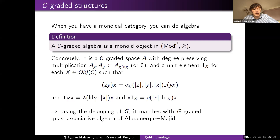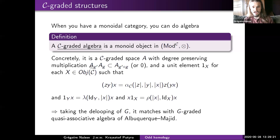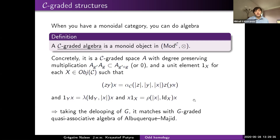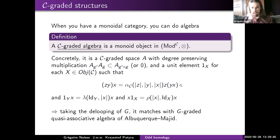A clarifying question was raised: in the unit formula, the small x is an element of the algebra while the capital X is an object in the grading category, and the unit 1_X corresponds to the identity at object X. Any algebra element x lives in a subspace A_g where g goes from some capital X to capital Y.